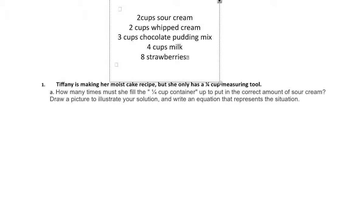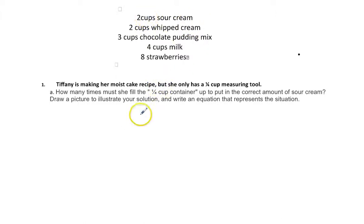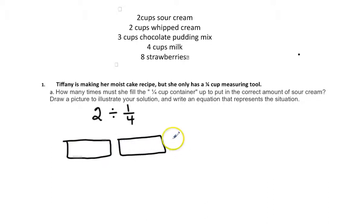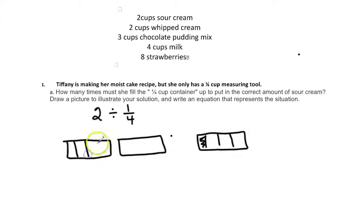In this problem, Tiffany is making her moist cake recipe but she only has a quarter cup measuring tool. How many times can she fill a quarter cup container up to the correct amount of sour cream? We draw our picture and write an equation. I need two cups of sour cream, so I need to find out how many quarter cups can fit into two cups. My number sentence is going to be two divided by one fourth.